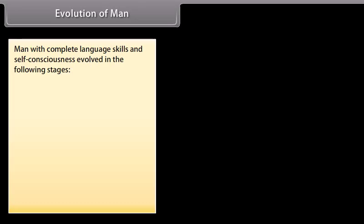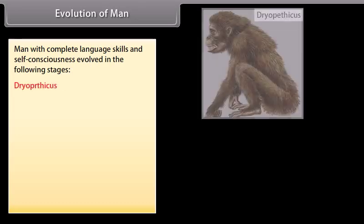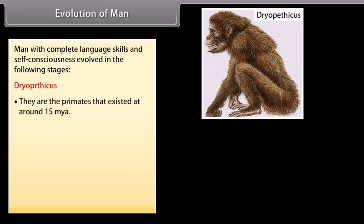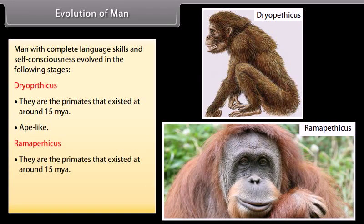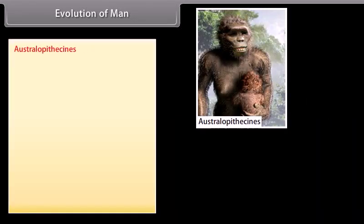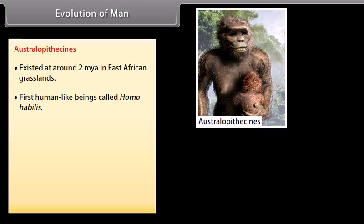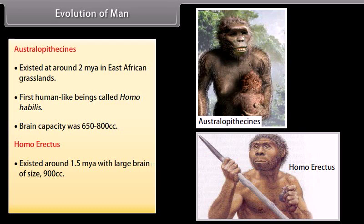Man with complete language skills and self-consciousness evolved in stages. Dryopithecus were ape-like primates that existed around 15 million years ago. Ramapithecus were man-like primates that existed around 15 million years ago, walked upright, and were about 4 feet tall. Australopithecines existed around 2 million years ago in East African grasslands; the first human-like beings, called Homo habilis, had a brain capacity of 650 to 800 cc. Homo erectus existed around 1.5 million years ago with a larger brain of about 900 cc.